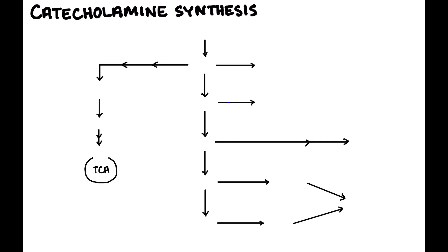Some of this is going to be a little bit of a review if you've watched my previous videos. We start out with phenylalanine, which is an amino acid, and that gets converted to tyrosine. The enzyme that does this is called phenylalanine hydroxylase, and it uses tetrahydrobiopterin as a cofactor. If this doesn't make sense, please go back and watch that video. Tyrosine then gets metabolized through multiple steps to something called homogentisate.